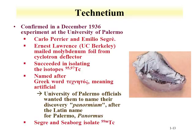Technetium, the lightest radio element, was discovered in 1936 at the University of Palermo by Carlo Perrier and Emilio Segrè, using a piece of molybdenum (Z=42) that had been a deflector in Lawrence's cyclotron. Nuclear reactions adding a proton to molybdenum produce technetium (Z=43). Segrè isolated several isotopes and named it after the Greek word for 'artificial.' Later, Segrè and Seaborg isolated technetium-99m, now the workhorse for radiopharmaceutical applications.